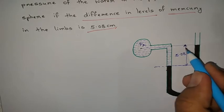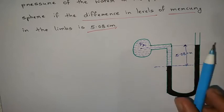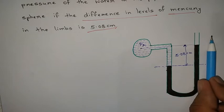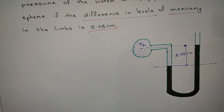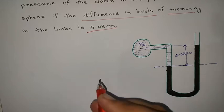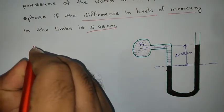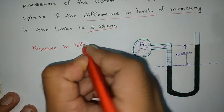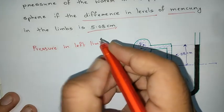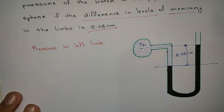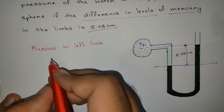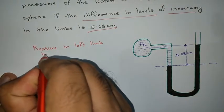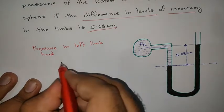Above the datum line, the pressure in the left limb is equal to the pressure in the right limb — only then will the U-tube manometer be in equilibrium. So first, let us calculate the pressure head in the left limb.